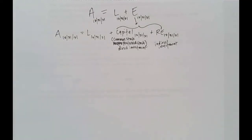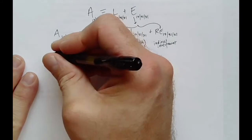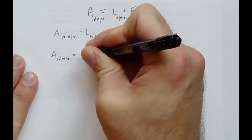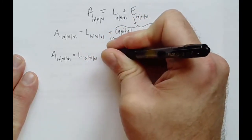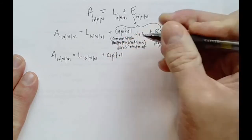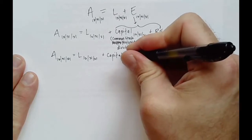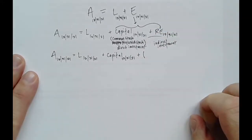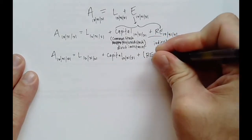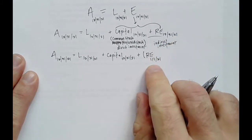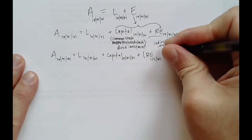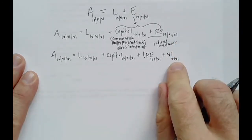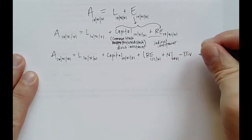The next meaningful expansion we can provide is on the retained earnings piece. Retained earnings summarizes into: beginning retained earnings at the start of the period — January 1st, 2021 — plus any net income that was earned over the year 2021, which is a period-of-time item, minus any dividends that were paid during 2021.